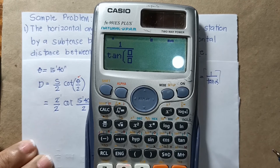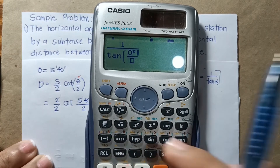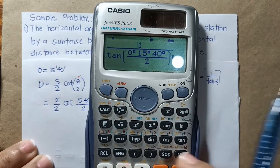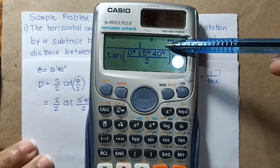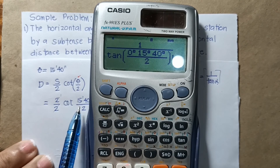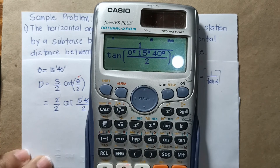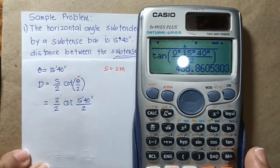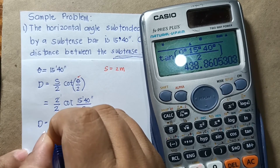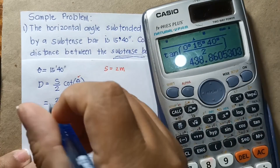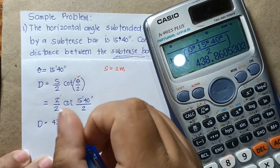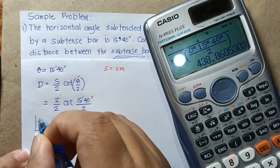Input the angle as 0 degrees, 15 minutes, and 40 seconds, then divide by 2, and close the parenthesis. This expression gives you the value of cotangent of 15 minutes 40 seconds over 2. Once you're done, press the Enter key. We get approximately 438.86 meters — that is the horizontal distance, with meters as the unit.